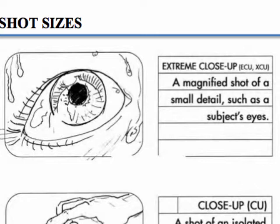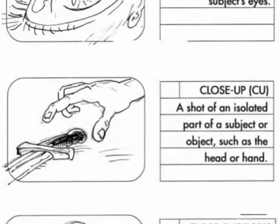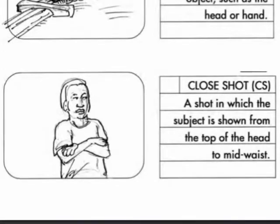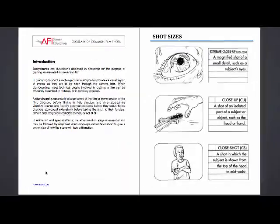We start with an extreme close-up — something that is very, very important to the audience. Usually we're showing part of a whole or something extremely small; this is a magnified shot of a small detail such as a subject's eye. Next, a close-up is a shot of an isolated part of a subject or object, such as the head or the hand. Like extreme close-ups, close-ups are used at moments of intensity to show something the audience must know about. A close shot is similar — it shows the subject from the top of the head to mid-waist, used in moments where we're supposed to notice the reaction of a character and a little bit about that character's body language.